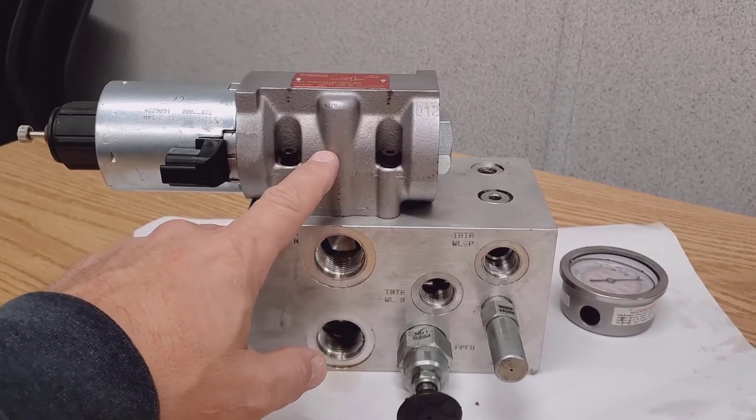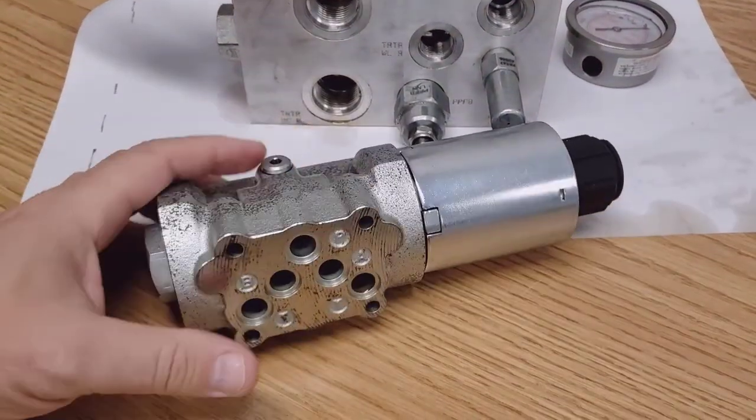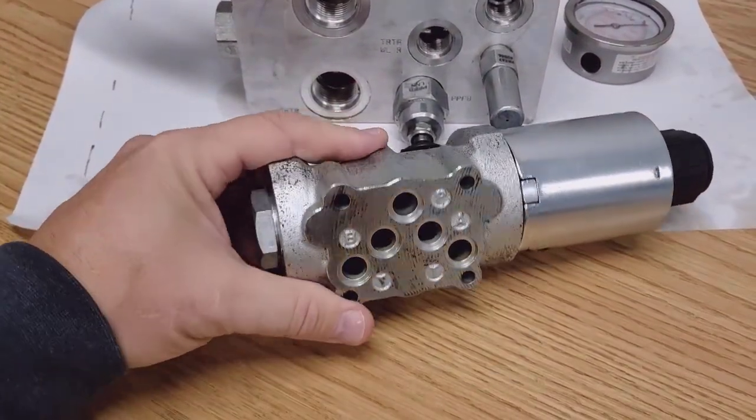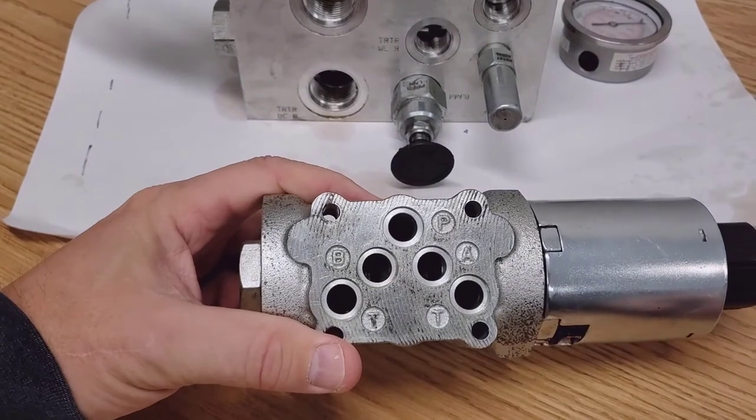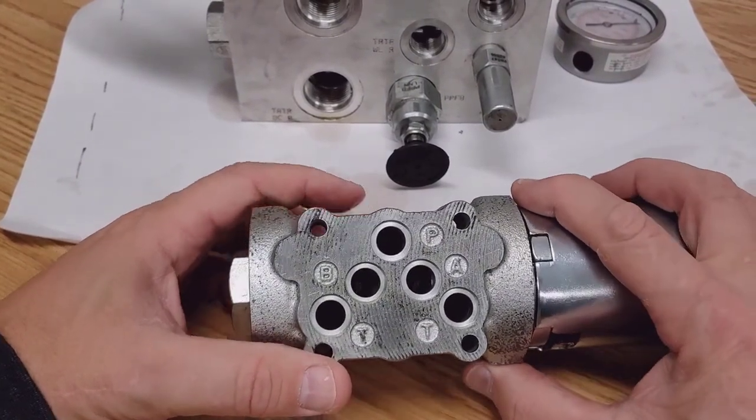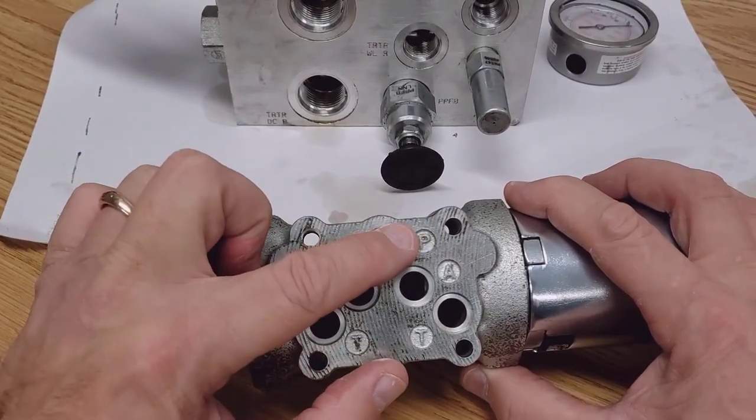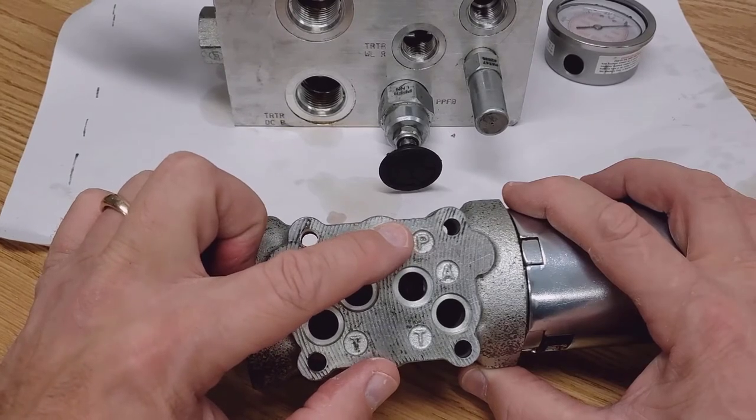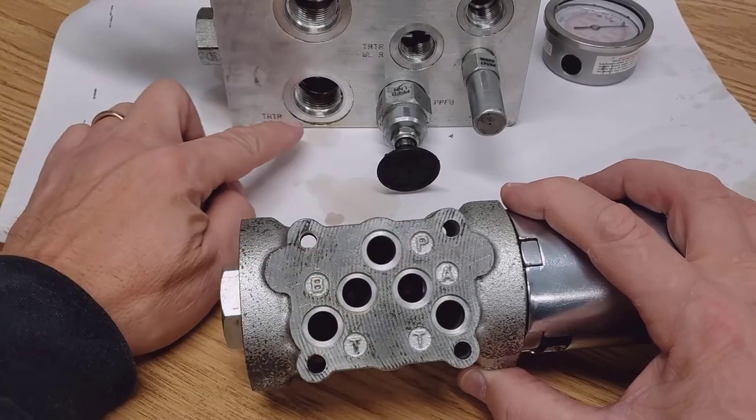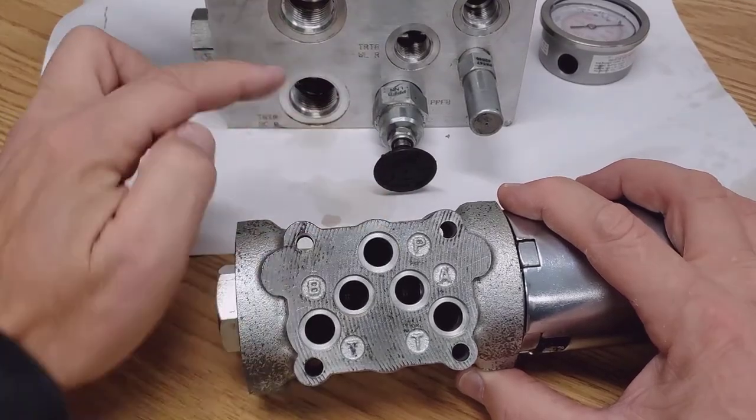I've got a directional control valve here, a used one. We're just going to focus in so we can talk a little bit about what's going on here. On our valve, we have a P port. That P port is directionally connected to the P port on the block. So that's the same oil.